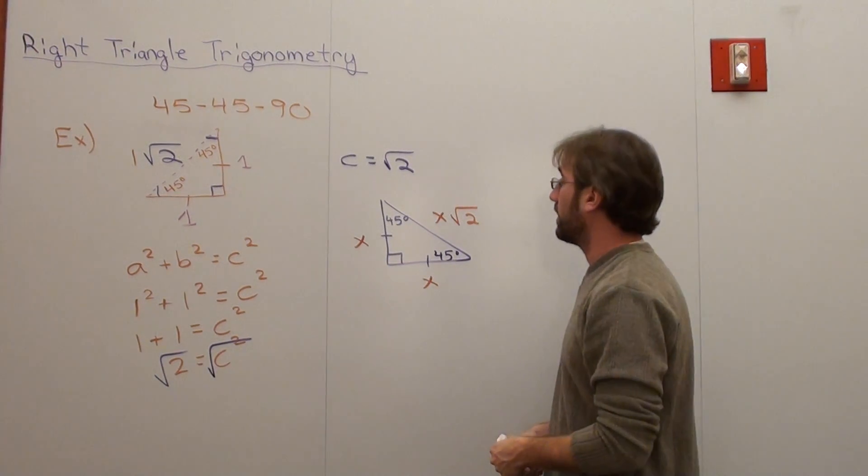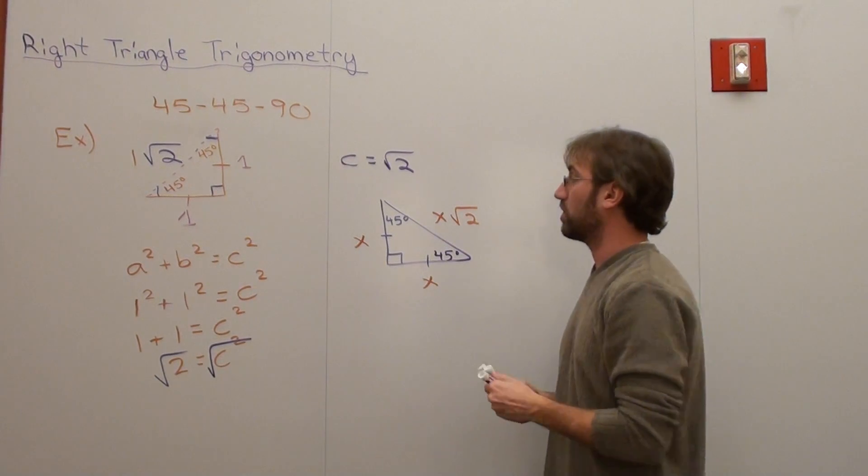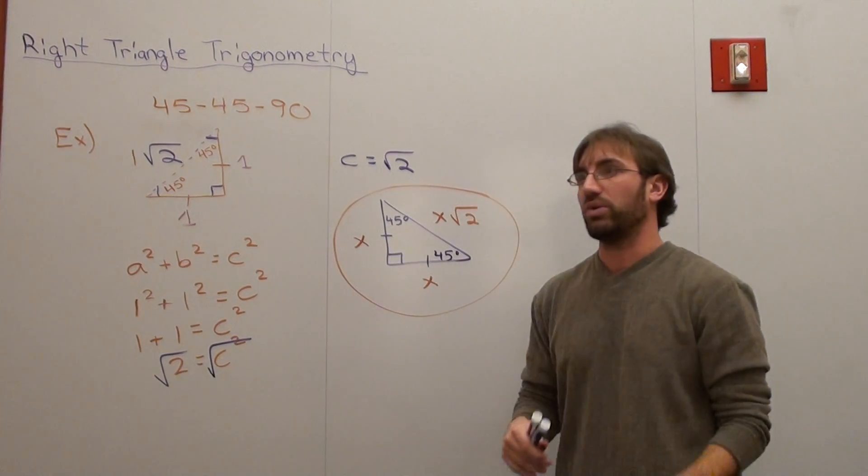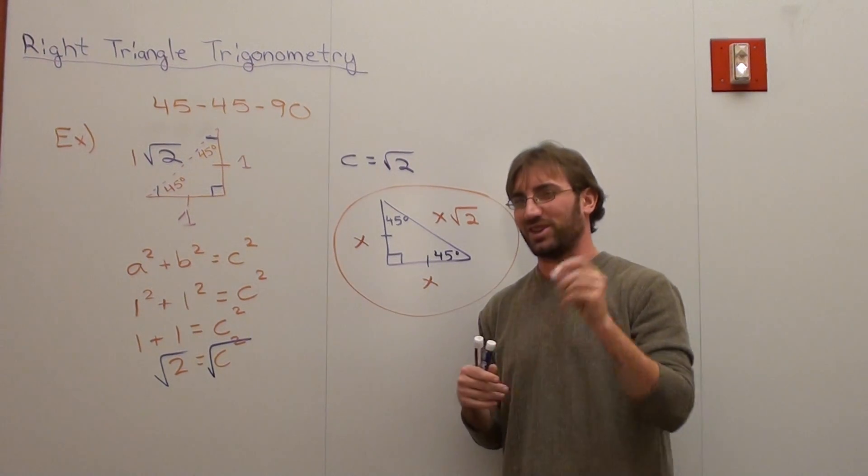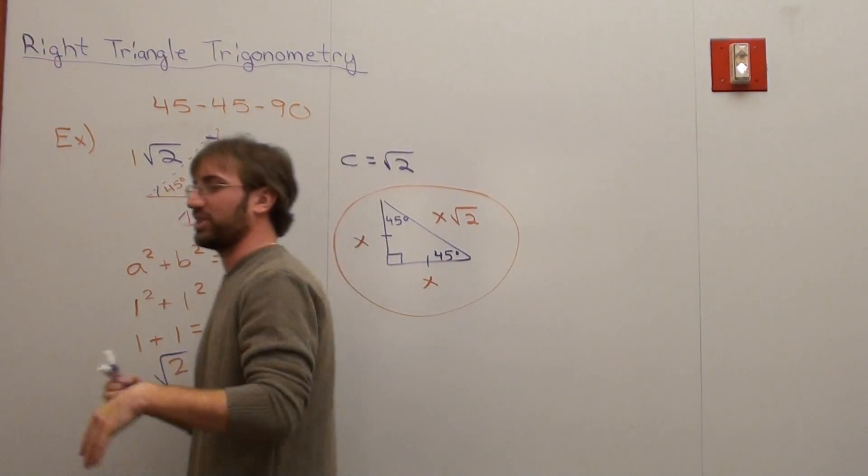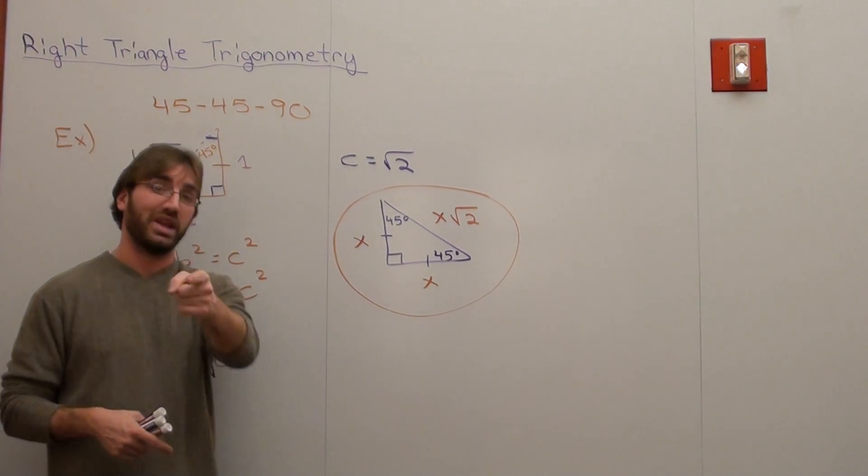I'm going to go ahead and show you a 30-60-90 triangle next, but I'm going to go ahead and write this down for reference later on. When we do sine, cosine, well, I don't want to get too far into it right now. Let's just do the 30-60-90, and then we'll work with the trig functions afterwards. So for right now, I hope that's helpful. Have a good day. Goodbye.